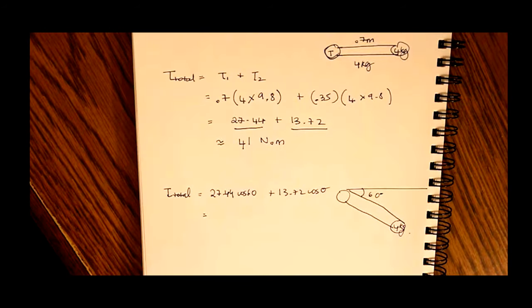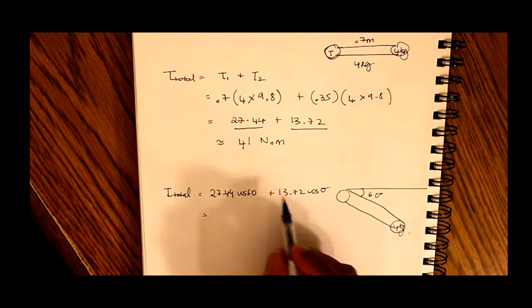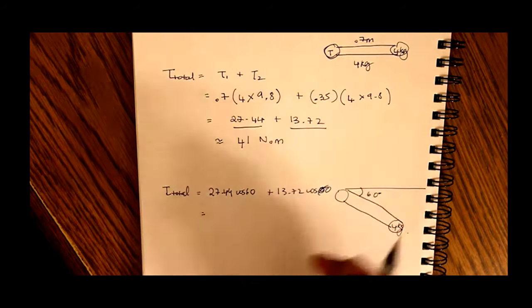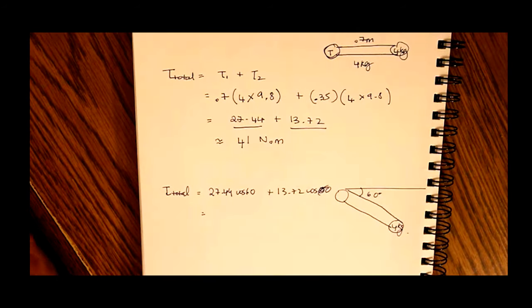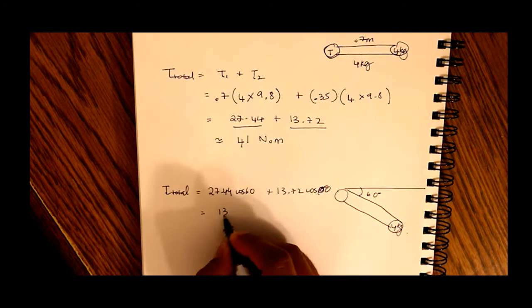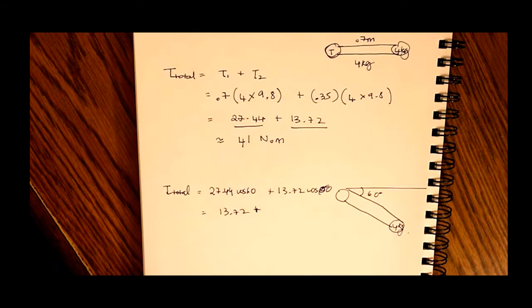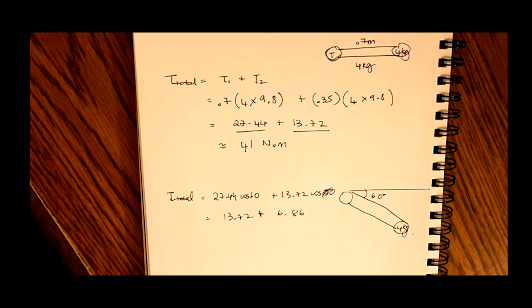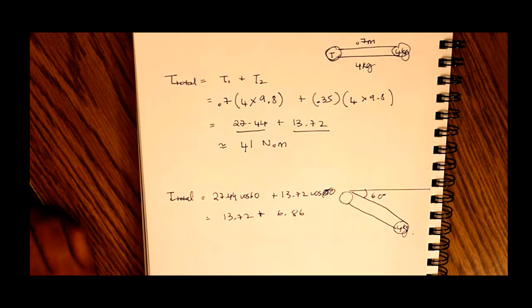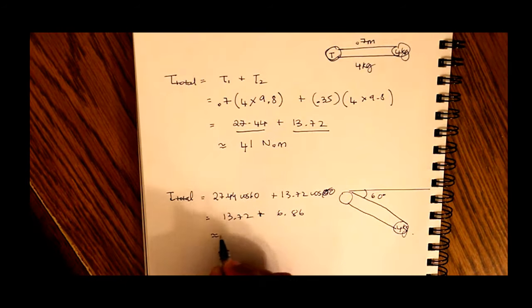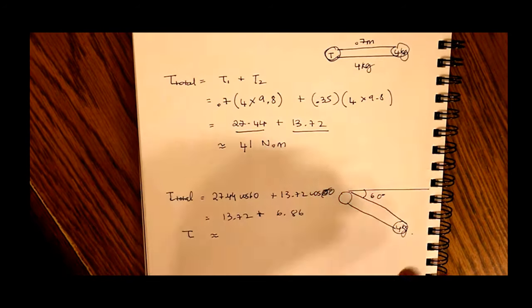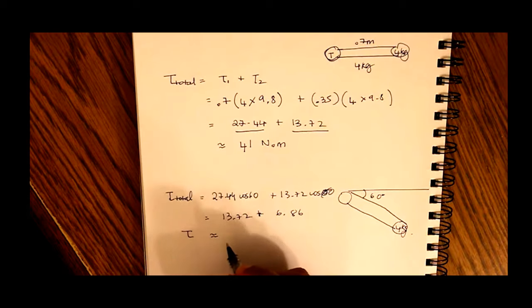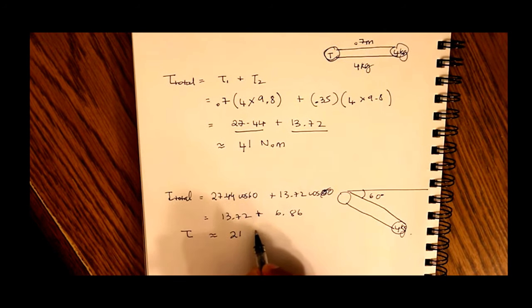So the cosine of 60 is what? Cosine of 60 is half. So we'll half these values. 27.44 divided by 2 is 13.72. And 13.72 divided by 2 is 6.86. So we'll add these two together. And we end up with an approximate torque when the angle of your hand is 60 degrees to the horizontal. The torque on your shoulder is 21 newton meters.